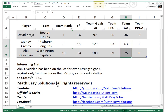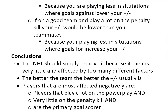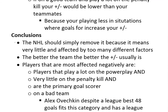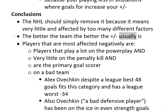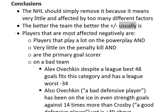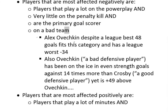So basically, it greatly exaggerates the significance of what it's trying to do — say if someone is a good offensive and defensive player. To go over conclusions from this analysis: the NHL should simply remove the plus-minus stat because it means very little and is affected by too many factors. The better the team, the better the plus-minus, which shouldn't be that big a factor for an individual stat. Players most negatively affected are those who play a lot on the power play, very little on the penalty kill, and are the primary goal scorer. Alex Ovechkin, despite a league-best 48 goals, fits this category and has the league-worst minus-34.